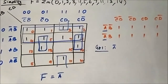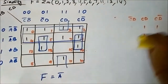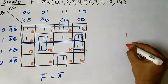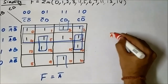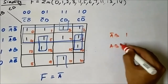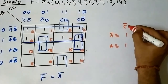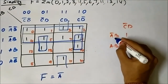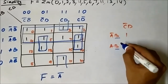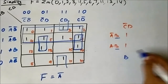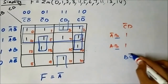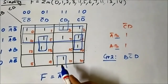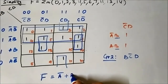Now for the second group — the remaining are pairs. Let us consider this pair. The horizontal components are a bar, b and a, b — so from the horizontal side only b is common. The vertical component is c bar, d, and c bar, d is common in both cells. So the common variables for group 2 are b, c bar, d.